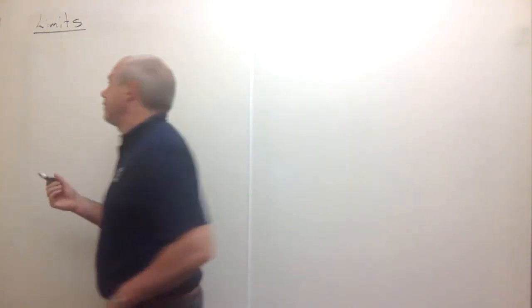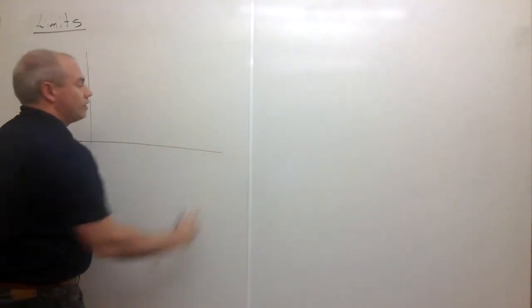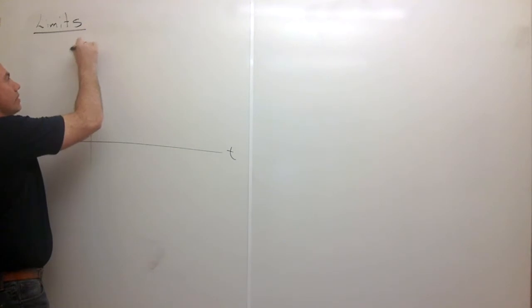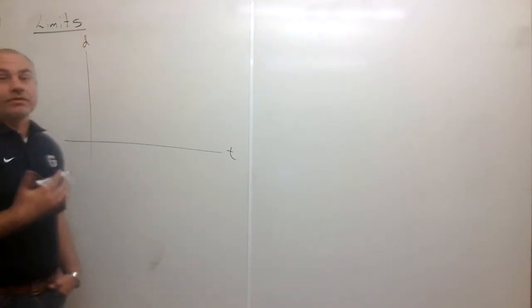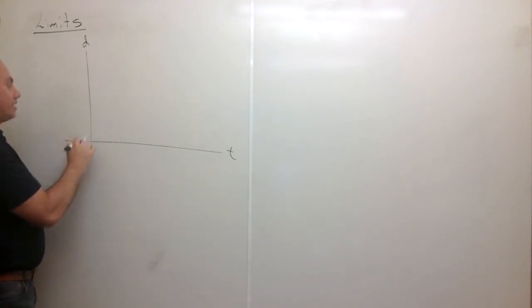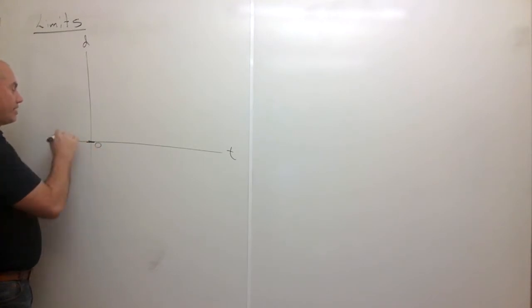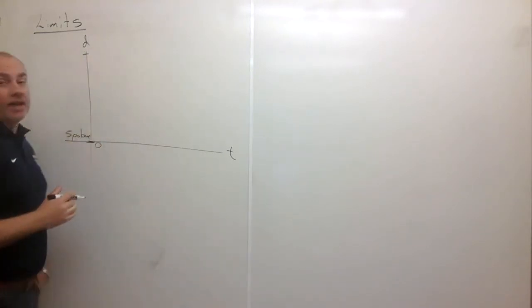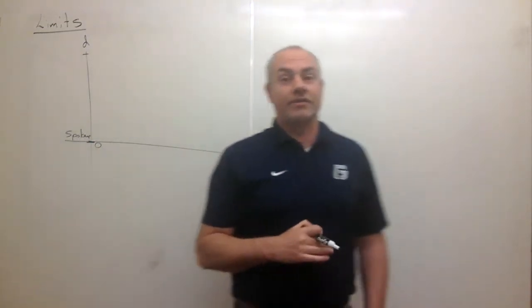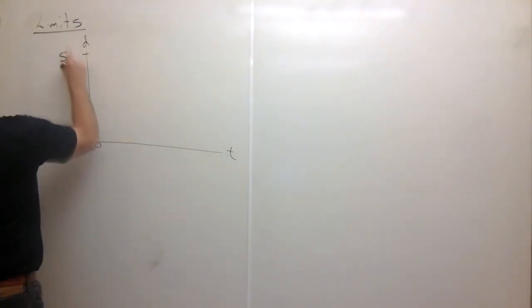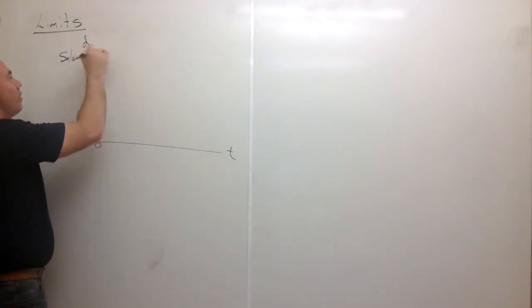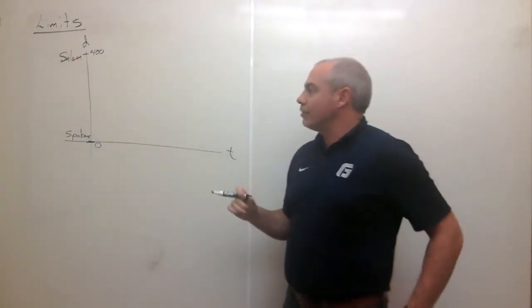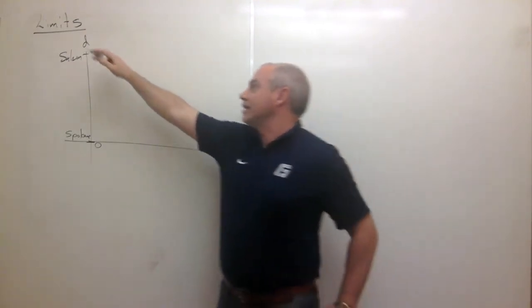To start out, I just want to draw you a graph. My x-axis in this case is going to be time, and my y-axis is going to be distance. I used to live in Spokane, Washington, so distance zero here — this is y equals zero — this is Spokane. And then up here, some distance away, I used to have to drive from Spokane to Salem. And Salem is almost exactly 400 miles away from Spokane. So now I'm going to draw my trip on this time and distance axis.